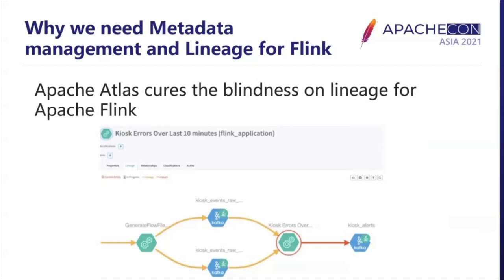Here comes the answer. With Apache Atlas's help to collect lineage and metadata from Apache Flink, data analysts, scientists, and governance teams can easily understand how Flink jobs are connected to each other and what the downstream impact is. They can also dive into each Flink job and visualize how a particular job reads from its source and writes output to its target. Your data lake assets are now fully tracked and searchable with Apache Atlas. In the next session, Josh Ye will introduce the technical details on how Apache Atlas gathers lineage data from Apache Flink.